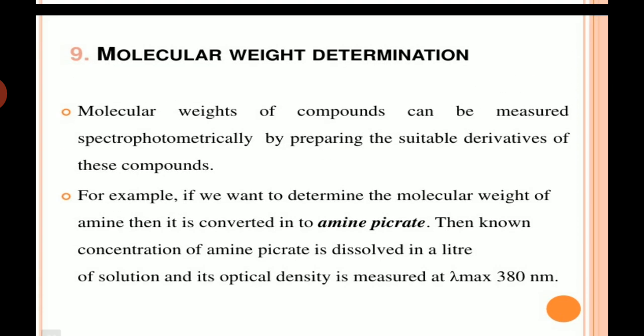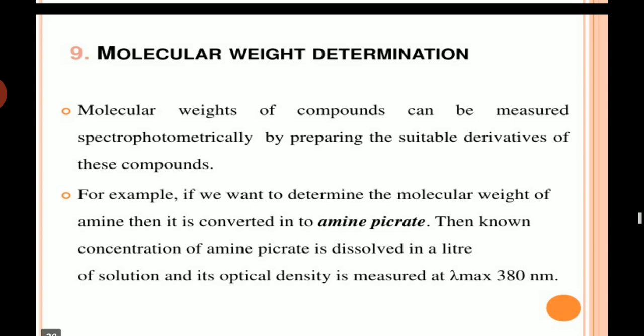Molecular weight determination. This is the last application of spectroscopy. Molecular weight of compounds can be measured spectrometrically by preparing suitable derivatives of the compound. For example, if we want to determine the molecular weight of an amine, then it is converted to amine picrate. Then a known concentration of amine picrate is dissolved in a liter of solution and absorbance is measured at 380 nm lambda maximum.